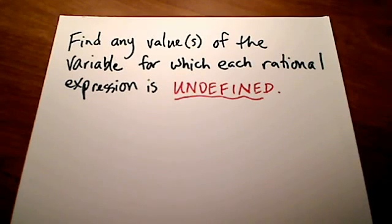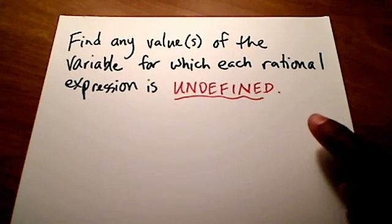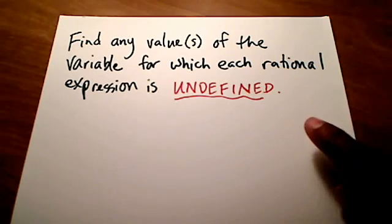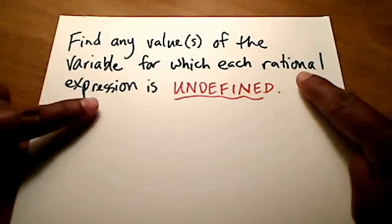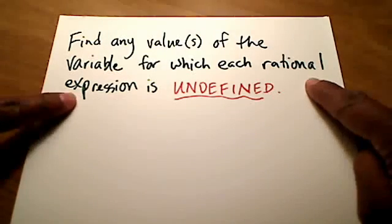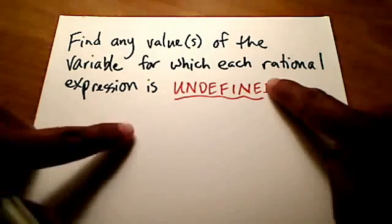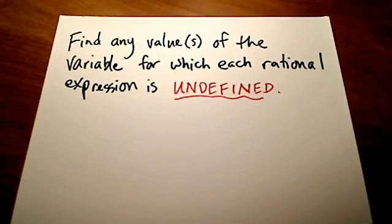In this video, I want to explain and show how to find values for which the variable would make a rational expression undefined. A rational expression is just a fancy way of saying a fraction. That's all it is. A rational expression is just a fraction, like two-fifths or three-eighths or something like that. Except these fractions, these rational expressions, have variables in them.